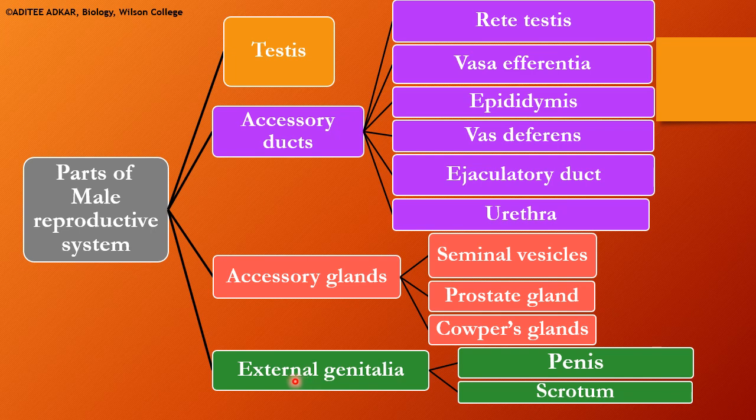And the external genitalia — those parts of the reproductive system which are located on the external body surface. They are the penis and the scrotum.